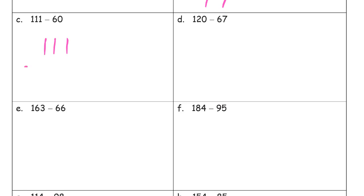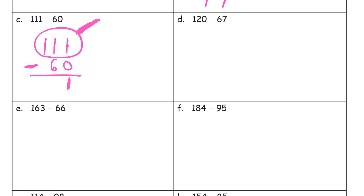111 is our minuend, and we're subtracting 60. I'm going to circle my minuend just to make sure I don't accidentally subtract it — that's the most common mistake at the beginning of this kind of subtraction. So 1 one minus 0 ones — sure, I can do that, I still have 1 left. Looking at my tens: I have 1 ten, and I'm subtracting 6 tens. I can't do that with only 1 ten, so I have to unbundle this 100. I won't have any hundreds left — zero. But now I will have 11 tens, because I get 10 tens for that 100 plus the one I already had. 11 minus 6 is 5. Answer: 51.